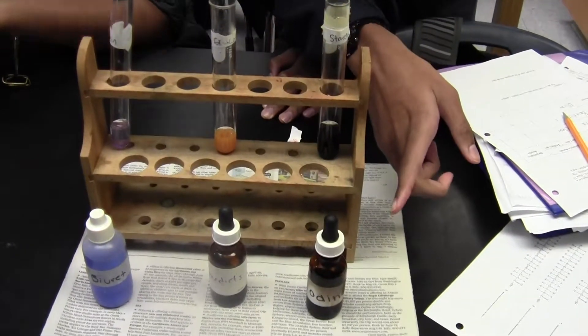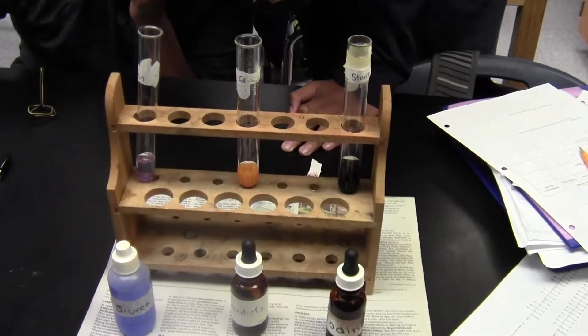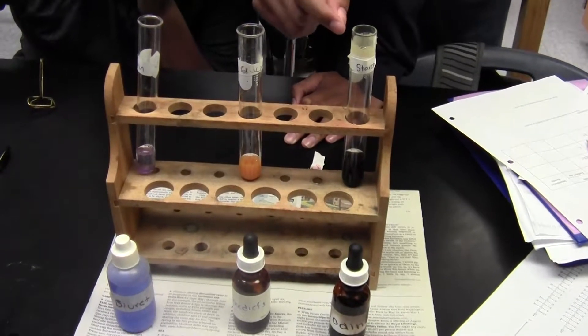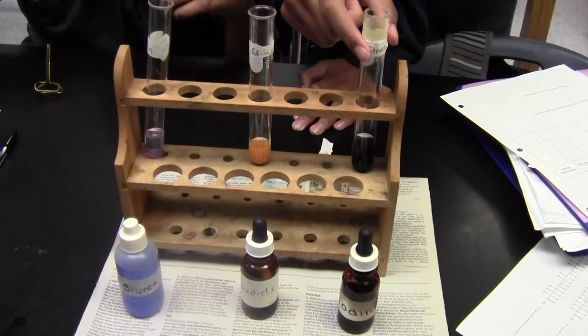For starch, we took the iodine reagent and put three to five drops in it, and it turned black after a few seconds.